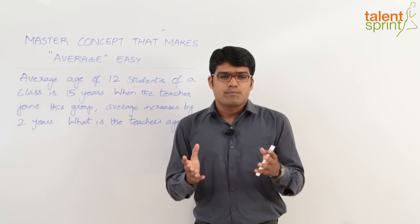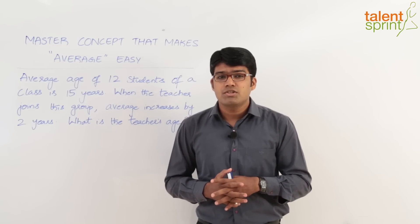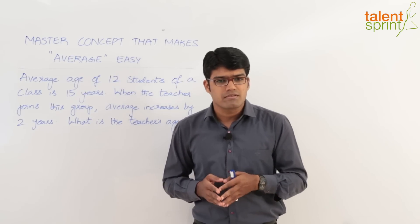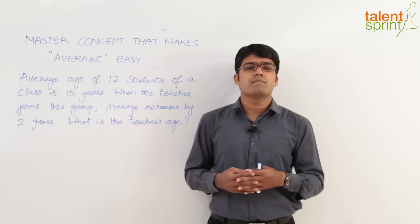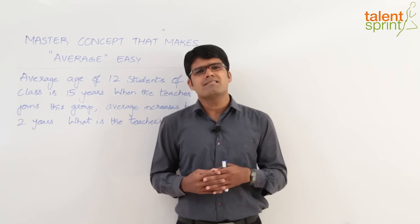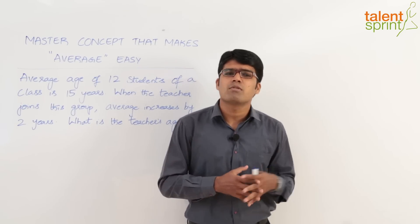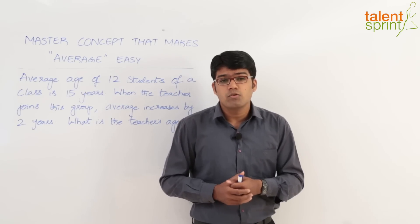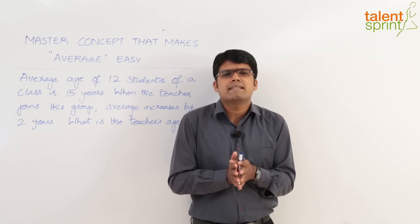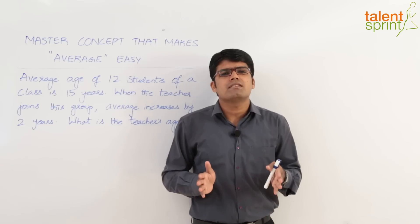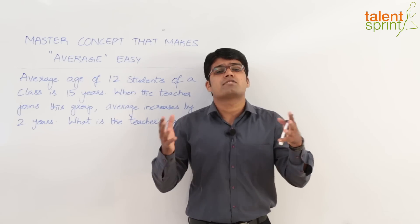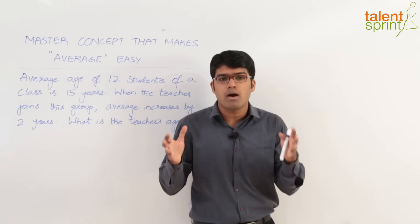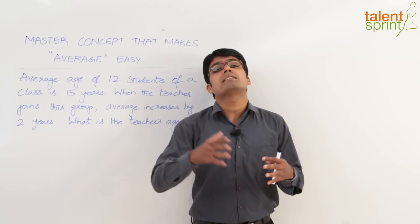What is the actual definition of average? It is the sum of all the values divided by the number of values. That's the conventional method. But if you look at the concept, we can say that average is nothing but an equal distribution — an equal distribution of the total amount or total value among the given persons.